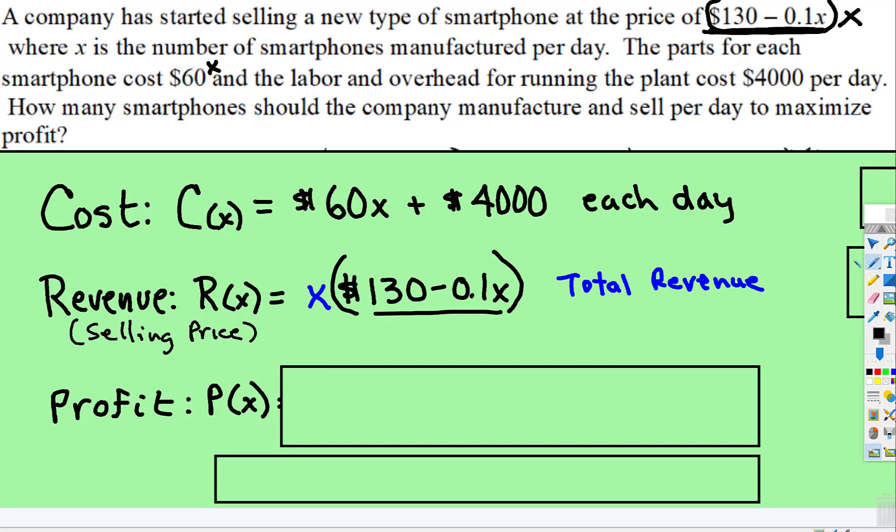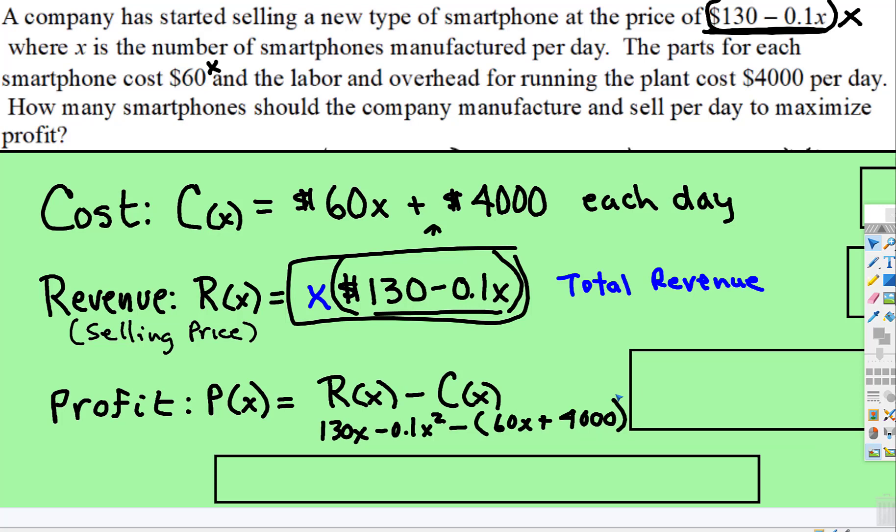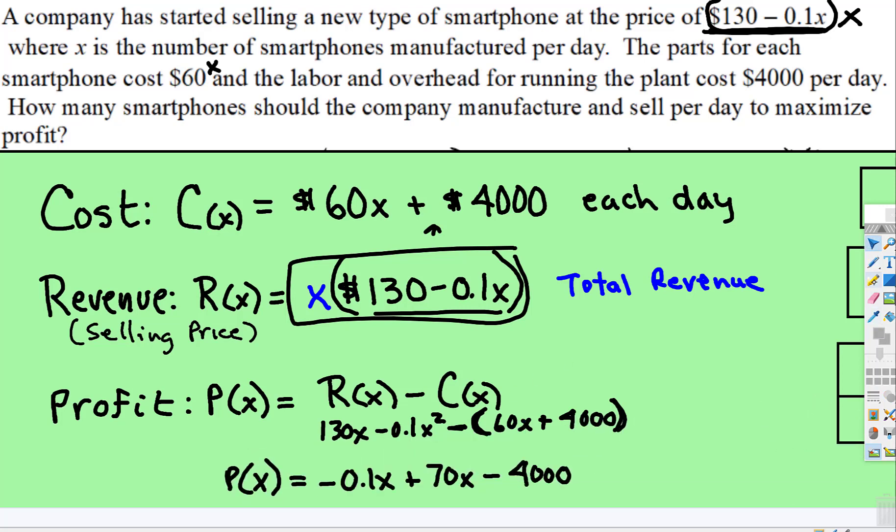Well, profit is easy. Profit is just how much you make, subtract how much it costs, how much you expend on costs. So revenue, subtract costs. Well, the revenue is this. So when you multiply X times 130, you get 130X. X times negative 0.1X is subtract 0.1X squared. And then you have to subtract, this is the cost. So 60X plus 4,000. So when you simplify that, here is the profit function, and that is what we will be maximizing, the profit.